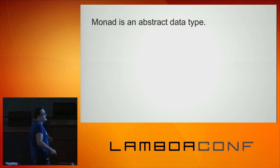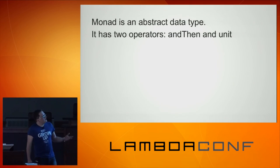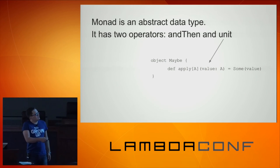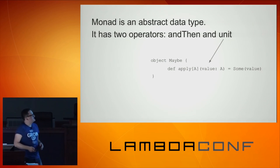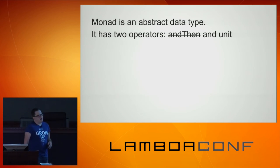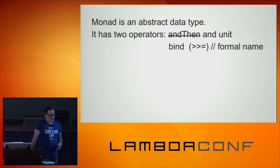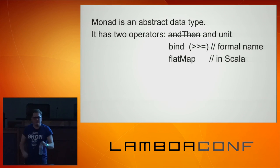So monad is an abstract data type. That's simply what it is. It has two operations: andThen and unit. Whenever we were doing lifting, we were actually calling a method called unit. If you look at papers on the internet, this method is actually not called andThen, but it's called bind. And if you come from Scala, they call it flatMap for whatever reasons.